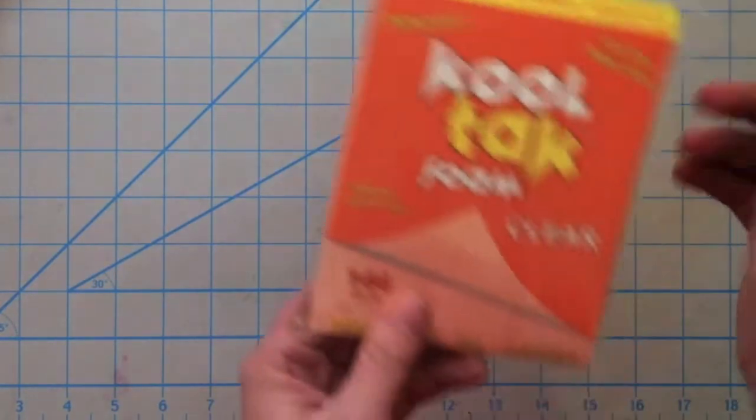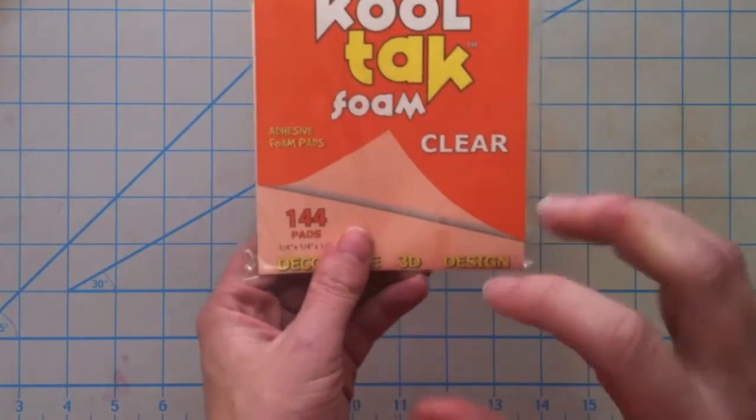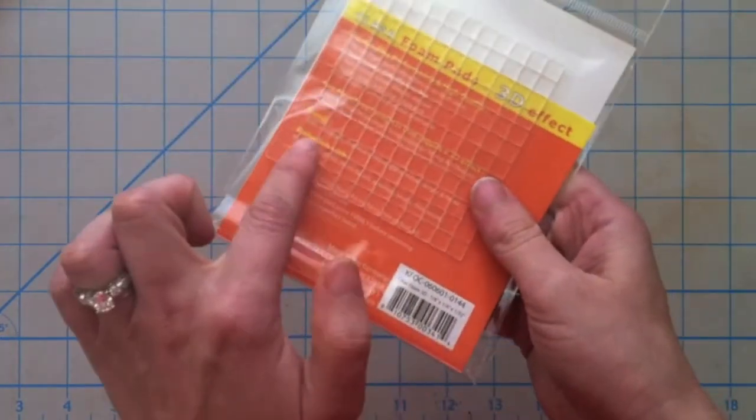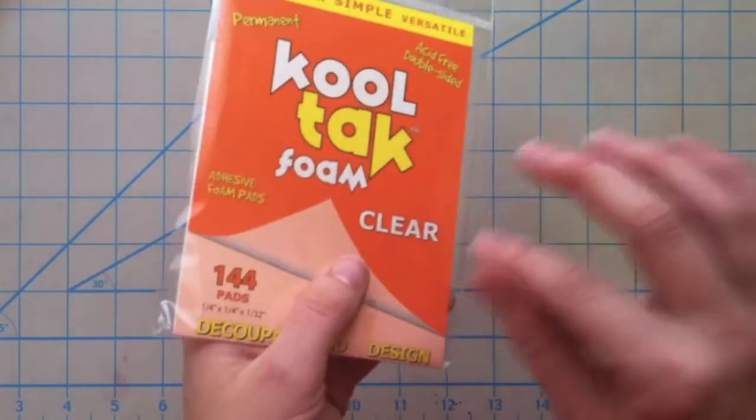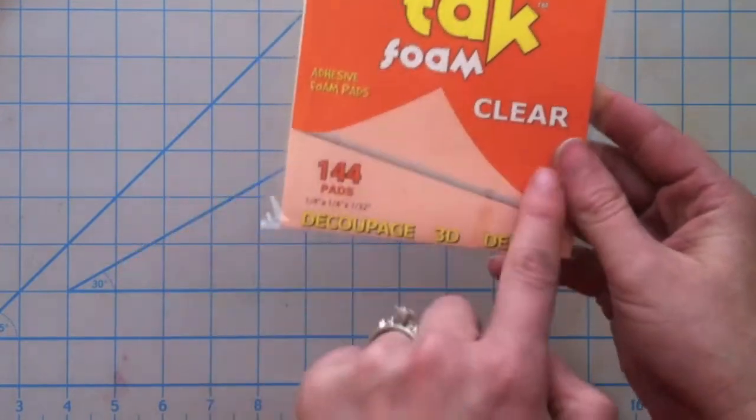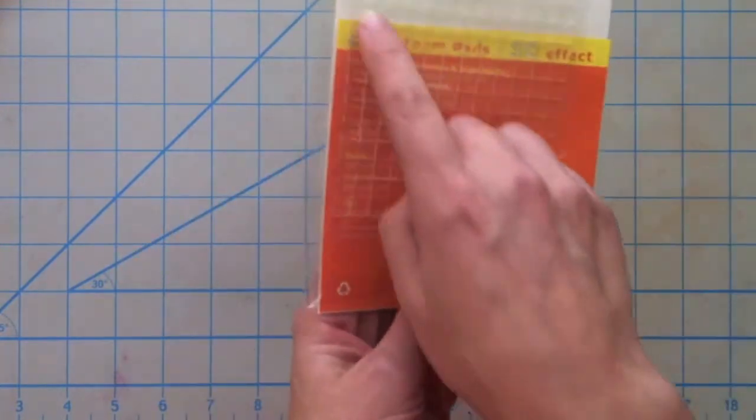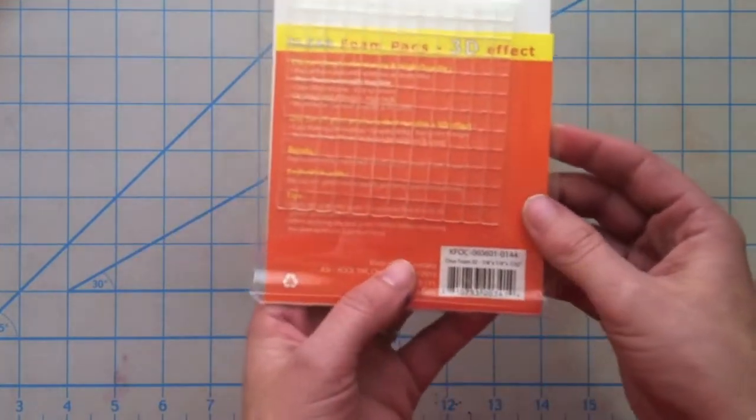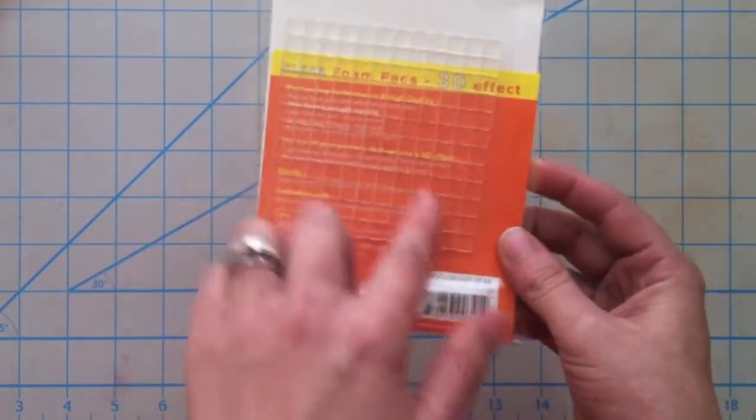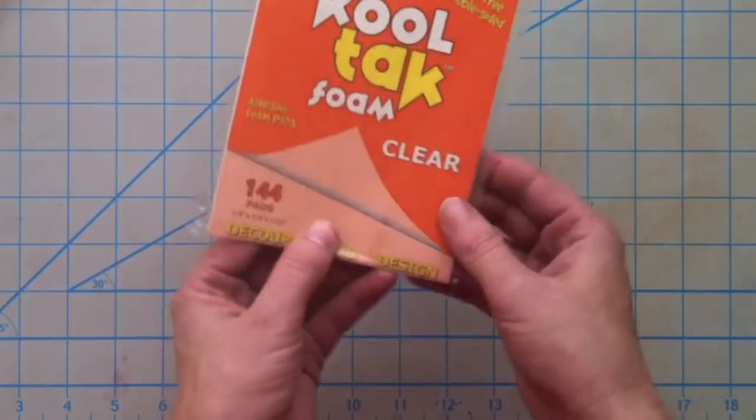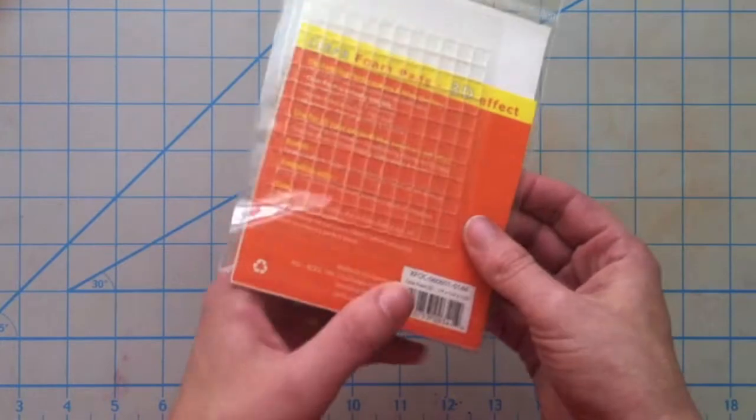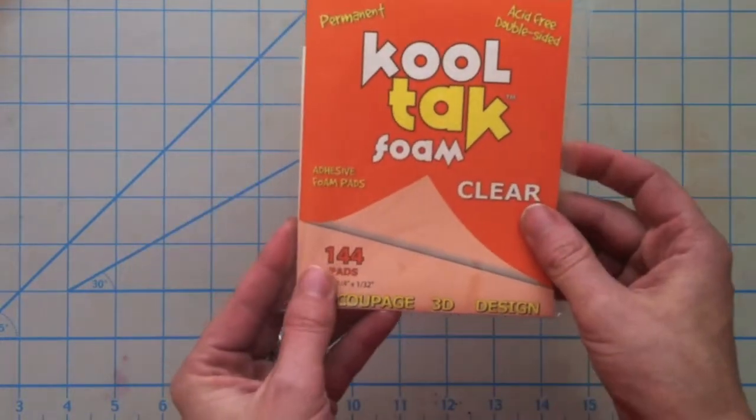I picked up this - this is pretty cool. You know those foam dimensions that you put on your pieces to pop them up? These are actually clear so you won't see the white from looking at an angle. This is Cool Tack Foam and they're clear and they come in 144 little squares. I'm only going to use these on special occasions because you can go through 144 pretty quick, but I thought this was very clever.